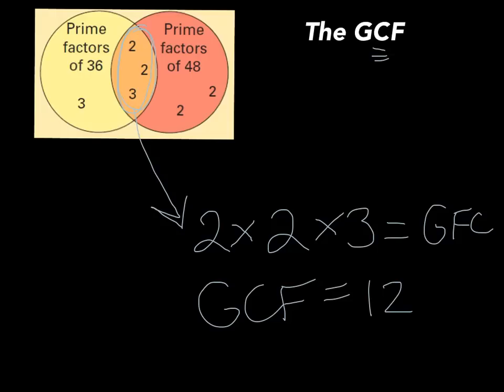If there's only one number in the middle of your Venn diagram, then that number by itself is the greatest common factor.